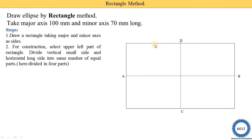In this upper-left part of the rectangle, we need to divide the vertical small side and the horizontal long side into the same number of equal parts. Here we divide into four parts. If you take more number of parts, the smoothness of the ellipse is higher. So here we decide to divide this vertical line and this horizontal line into four equal parts, then give names to them as shown.